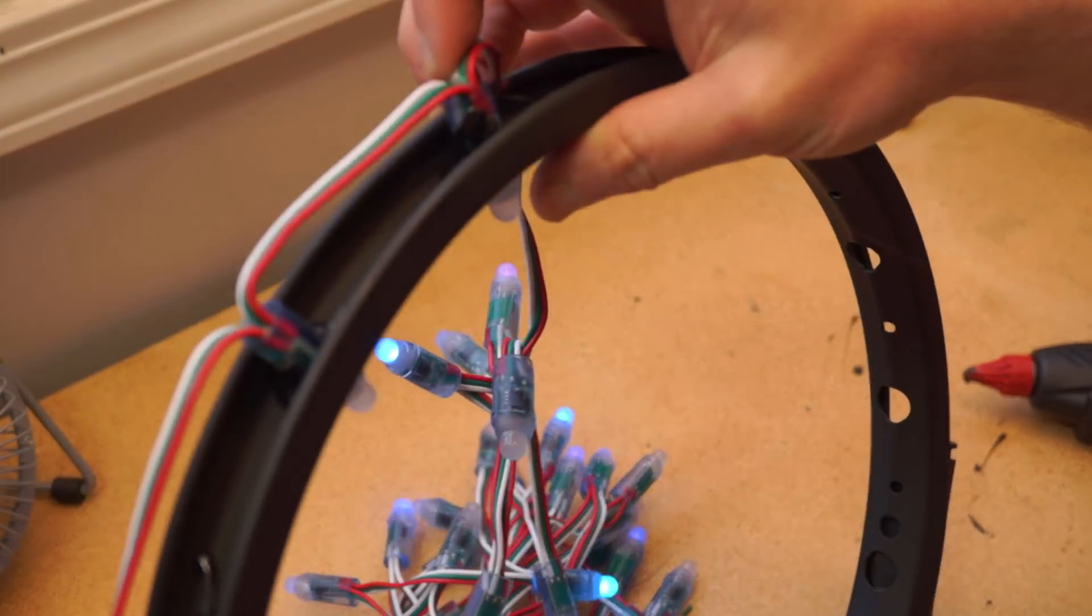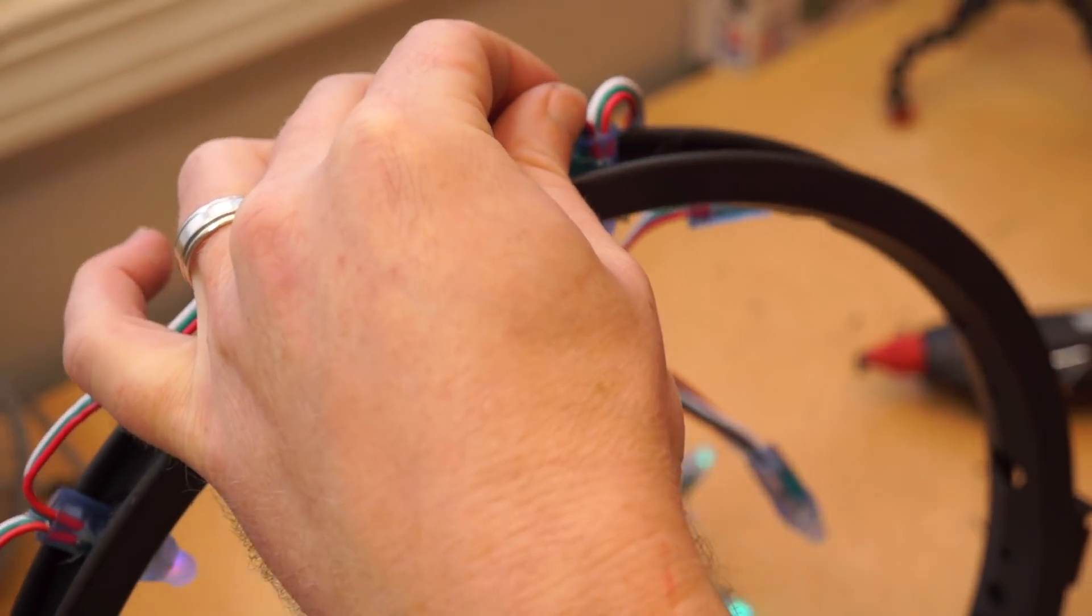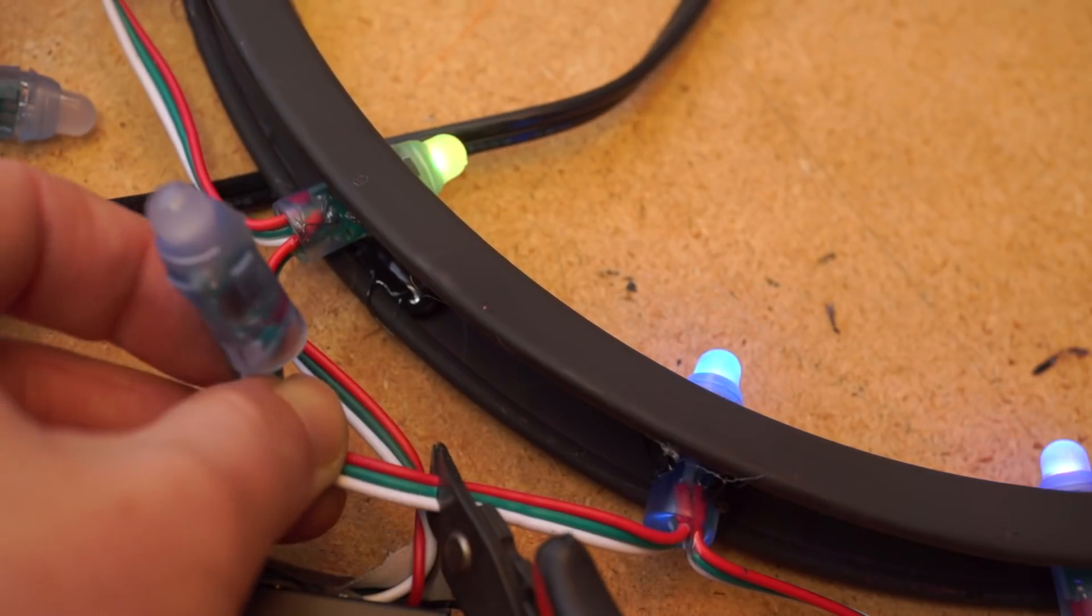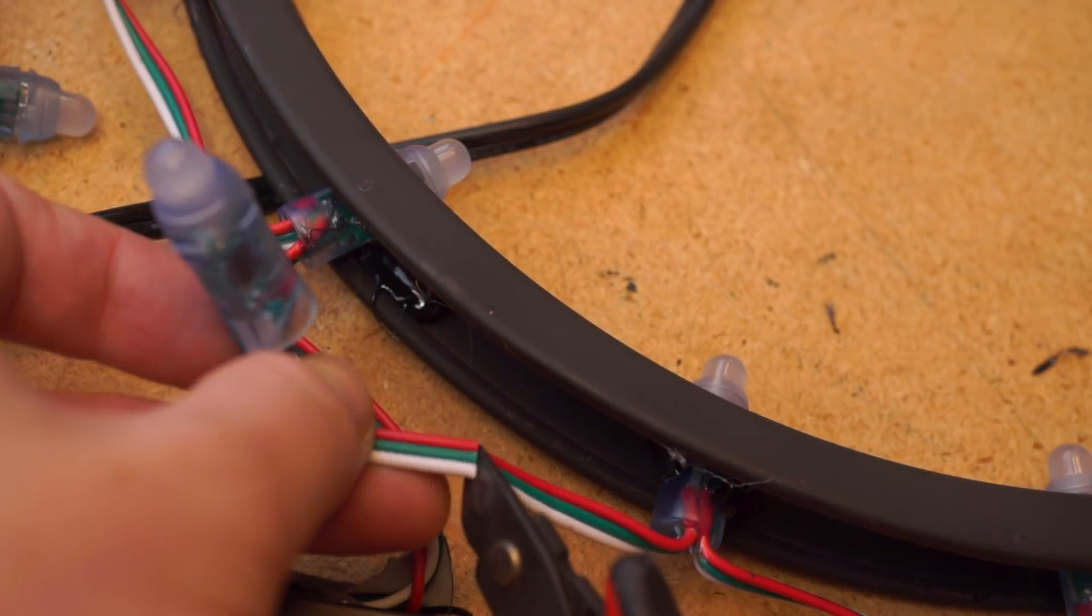With everything connected, I loaded up the Arduino code included in the instructable, then I used a glue gun to set each LED in the holes. At the end, I just clipped off the extra LEDs.